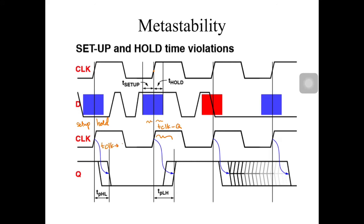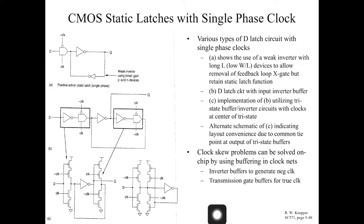The clock-to-Q time can be defined in two parts: the propagation time to go from high to low, or from low to high, depending on the input.